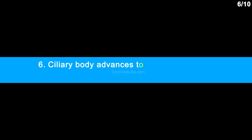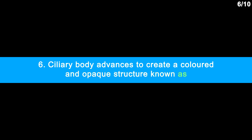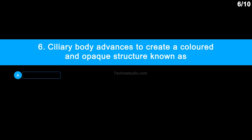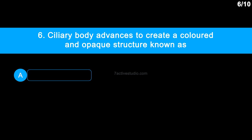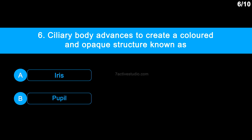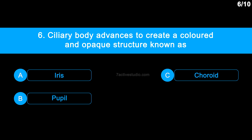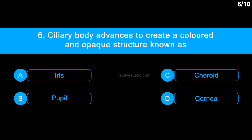Question number 6: Ciliary body advances to create a coloured and opaque structure known as... Option A: iris. Option B: pupil. Option C: choroid. Option D: cornea.